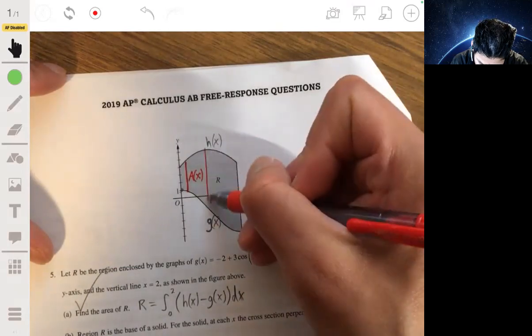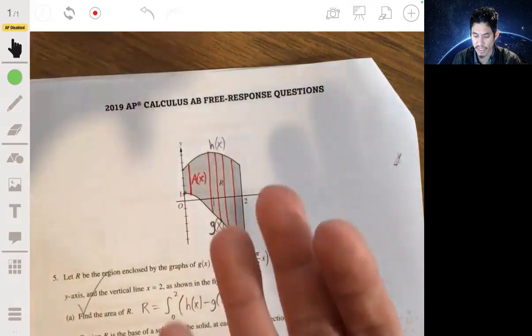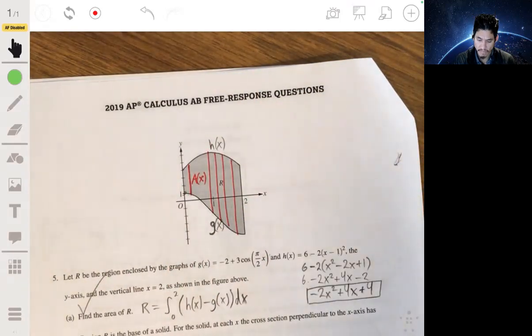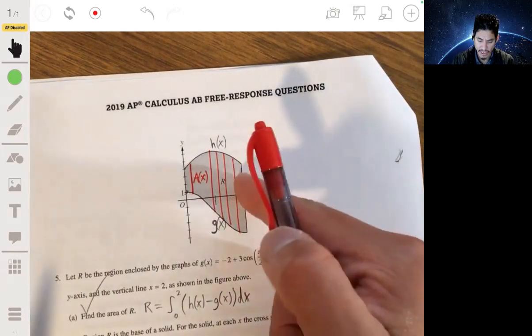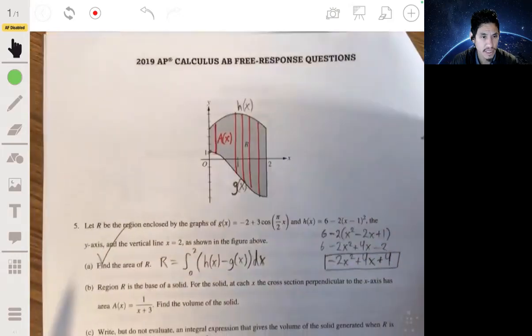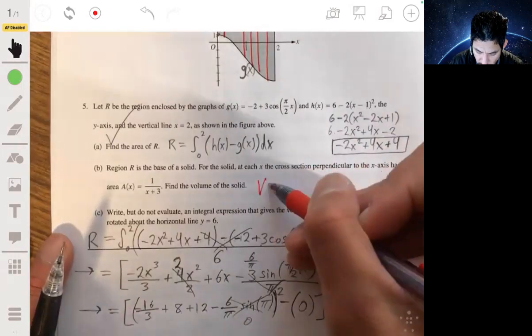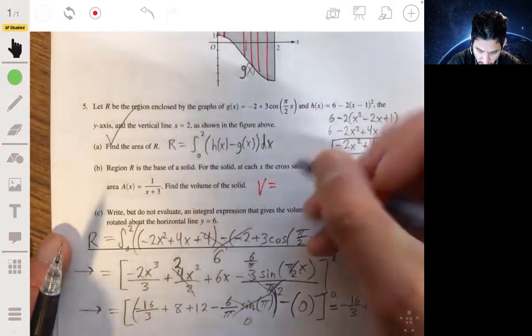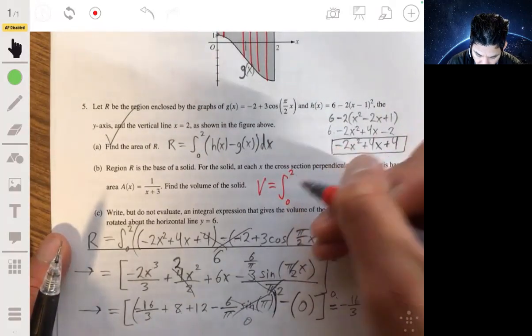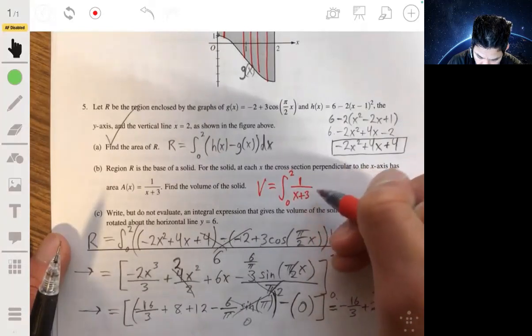So we're integrating all these cross-sections. Again, we don't know what the shape is, but what matters is that you define the volume of this. This is simply just going to be the volume being equal to these cross-sections being integrated from 0 to 2, so 1/(x + 3) dx.